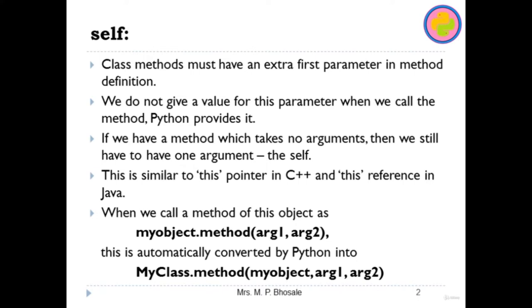If we have a method which takes no argument, we still have to give one parameter, and the name of that parameter will be 'self'. This is similar to the 'this' pointer in C++ or 'this' reference in Java. When we call any method, we use object_name.method_name and pass arguments inside the parenthesis. When we write the definition of a method, we use the self keyword first, then a comma, then the remaining parameters. While calling, we skip the self parameter and specify values only for remaining parameters.